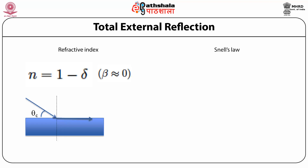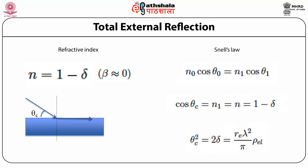Using Snell's law, where N0 is the refractive index of air and N1 is the refractive index of the medium, and theta_0 and theta_1 are the respective angles — when total external reflection occurs, the scattered wave does not penetrate into the sample. We can find the critical angle, which is dependent on the electron density. This is analogous to total internal reflection in ordinary light, but here the medium acts as a rare medium compared to vacuum for x-rays, so total external reflection takes place instead of total internal reflection.